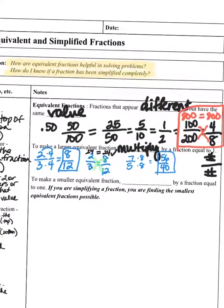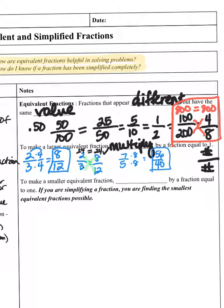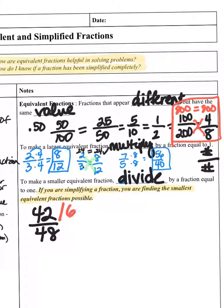So by the opposite token, to make a smaller equivalent fraction you're going to divide. And that's what we've been doing when we've been finding our common denominators, right? We've been dividing by different numbers until we got all the way down to the end. So if you were simplifying a fraction, you are finding the smallest equivalent fractions possible. So one we did quite a bit with our finding greatest common factors was 42 over 48, and you can look at your multiplication sheet and know that those can both be divided by 6.